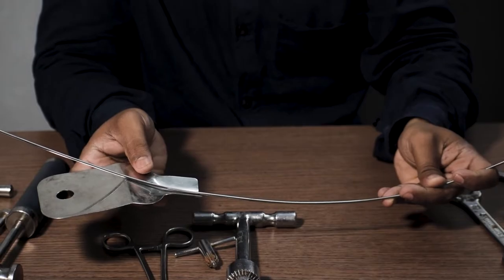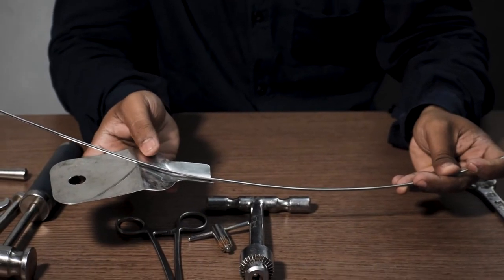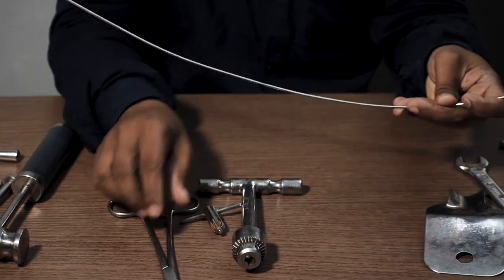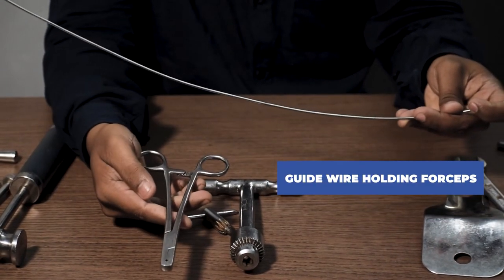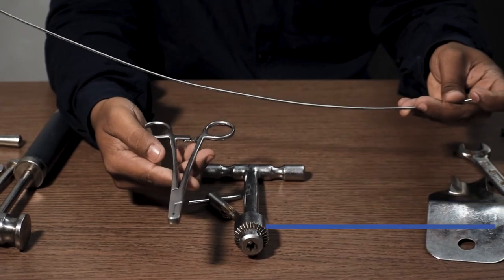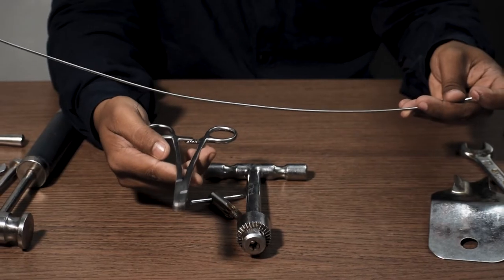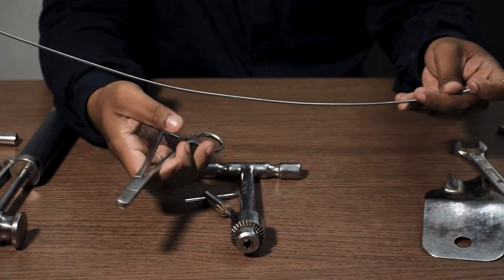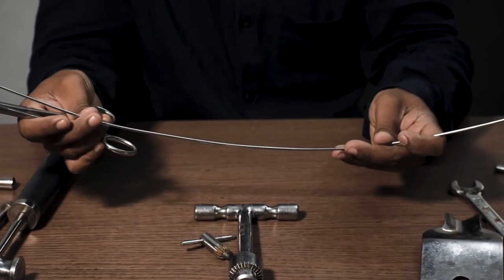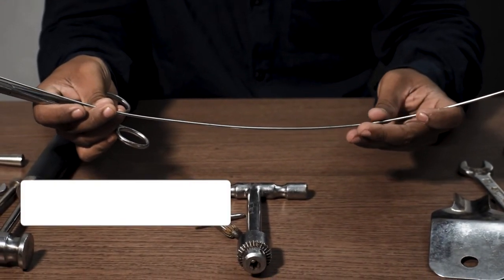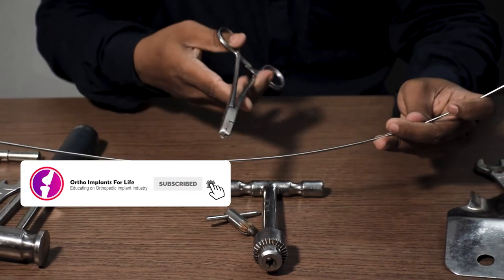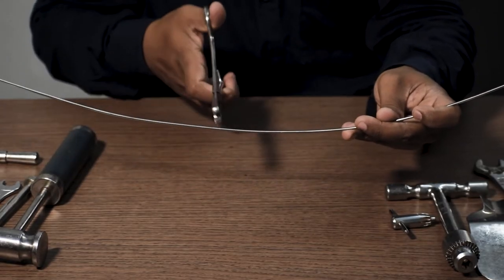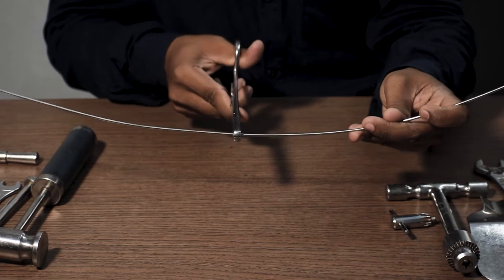This device is called a guide wire holding forceps. While using flexible reamer, when the flexible reamer is being taken out, there is a chance of the guide wire being pulled out with it as well from the medullary canal. That's when we use the guide wire holding forceps to hold the guide wire in place like this.